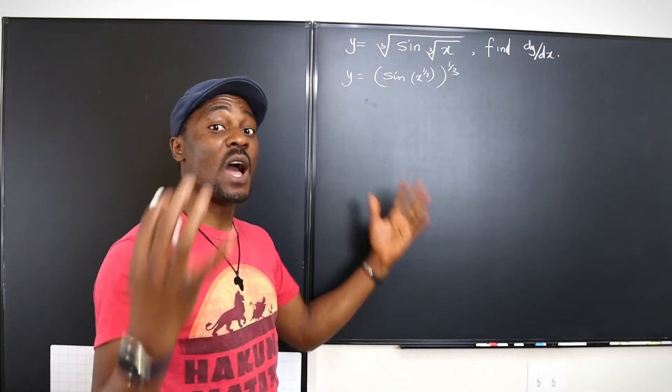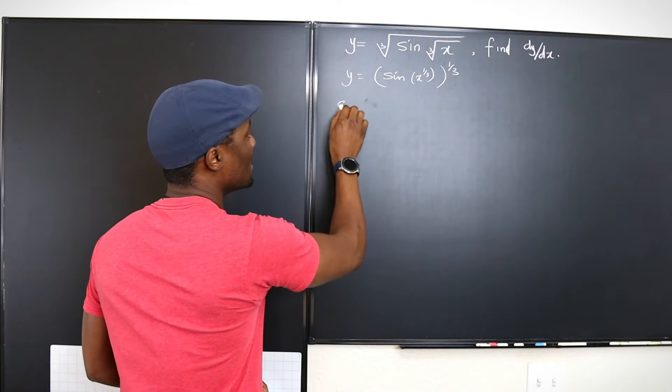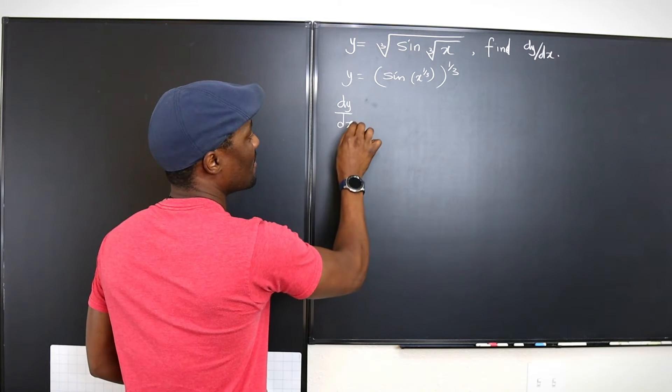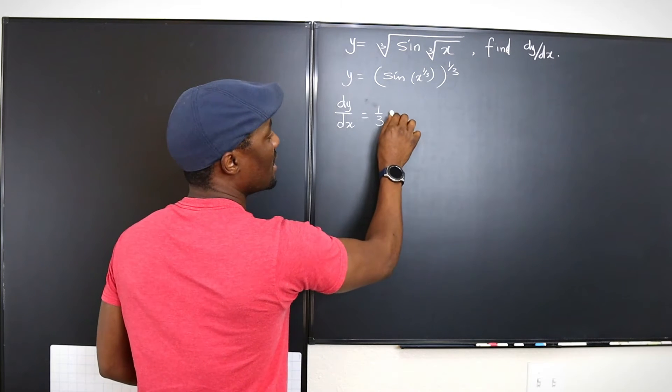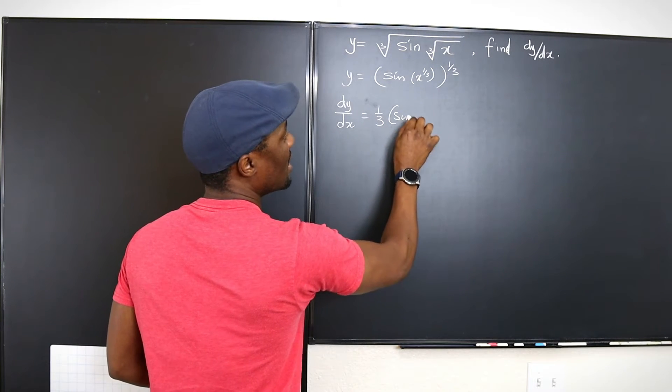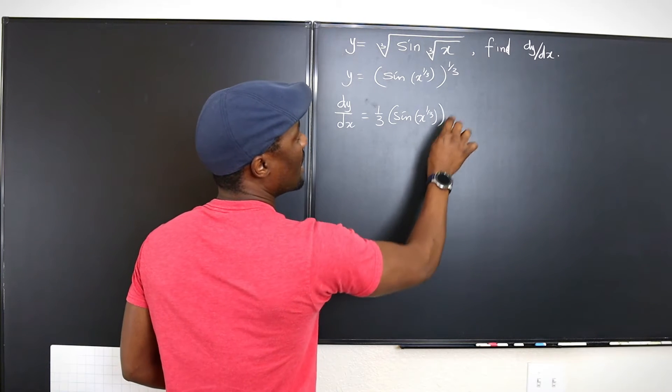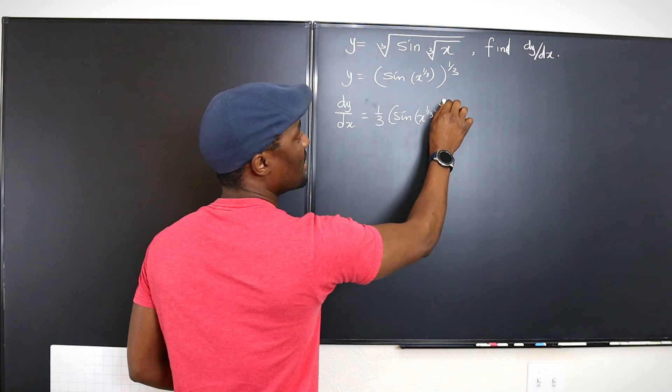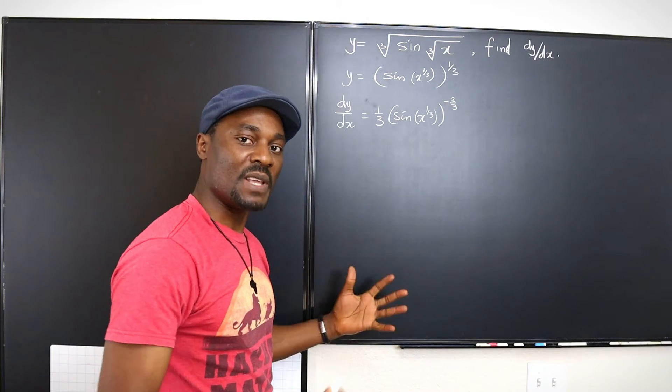So we're going to start from the outside and go all the way inside. Let's take dy/dx will be equal to, we differentiate the outside. That would be one over three. We have sine x to the one over three. Then we take one away from this. We're going to be left with negative two thirds. That's the first differentiation from the outside.